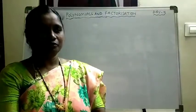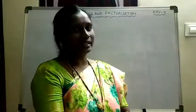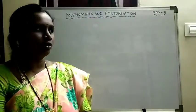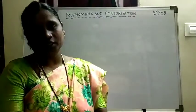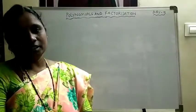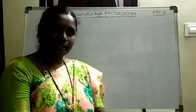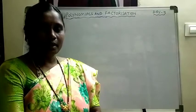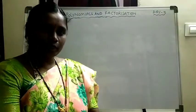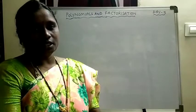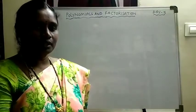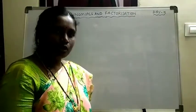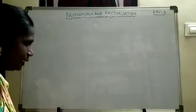Hello children, good evening all of you. Welcome back to the 5th day class of polynomials and factorization. In yesterday's class we learnt about how to factorize the cubic polynomial and completed some problems based on 4 algebraic identities: (a+b)², (a-b)², (a+b)(a-b), and (x+a)(x+b). You have to remember the formulas of all these identities. Today we will see some more identities and problems based on those identities.